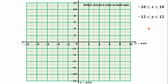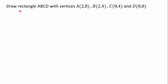The second part says we should draw a rectangle ABCD with vertices A at (2, 8), B at (2, 4), C at (8, 4), and D at (8, 8). These four points are the vertices of the rectangle ABCD. We are going to plot them on the graph sheet and join them to get the rectangle.